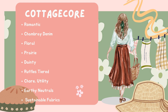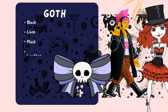So the idea is: use 'cottagecore,' but also use 'romantic.' If it's floral, say it's floral — but if it's not floral, do not put that in there. If it's a prairie style, add that. A peasant-type style might also be cottagecore, so include that too.